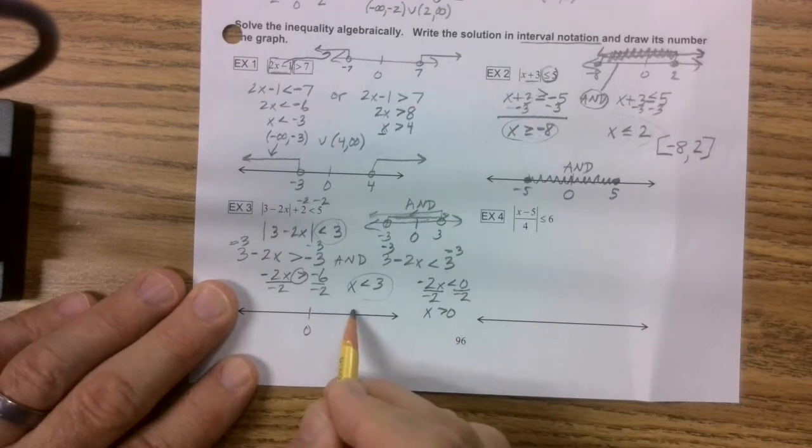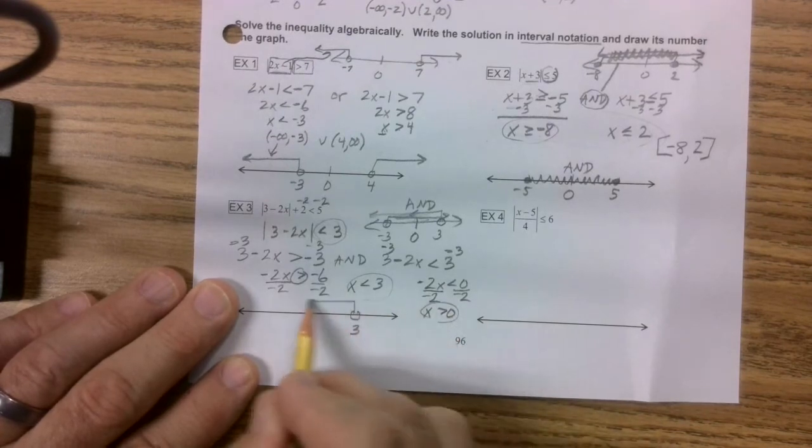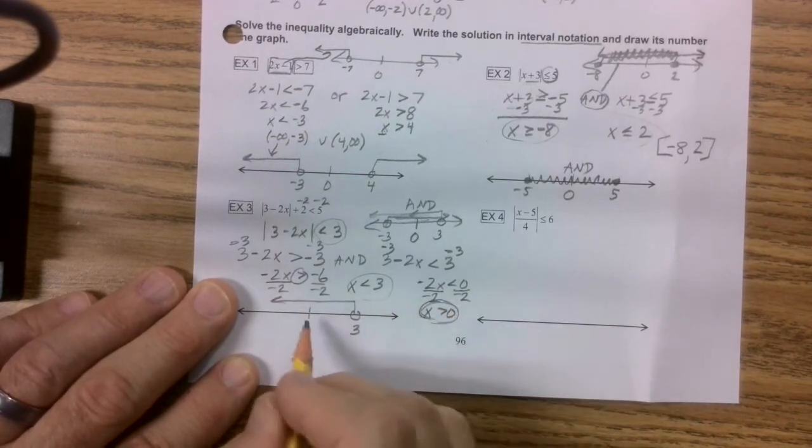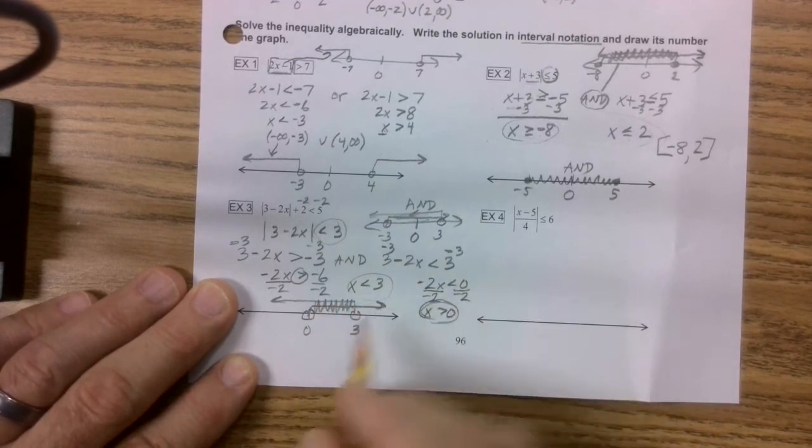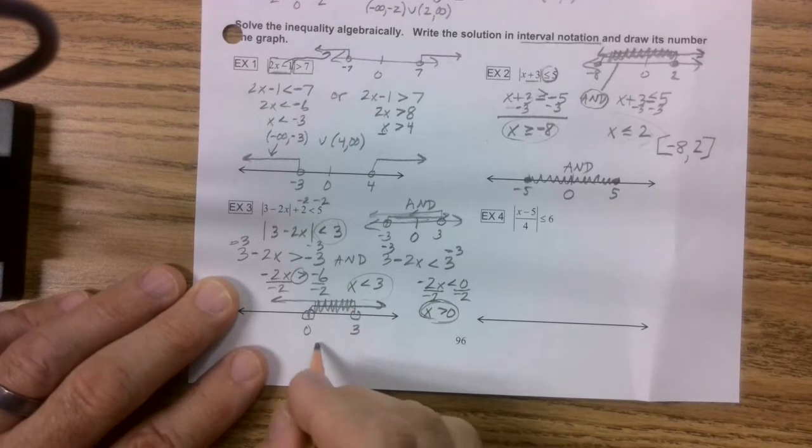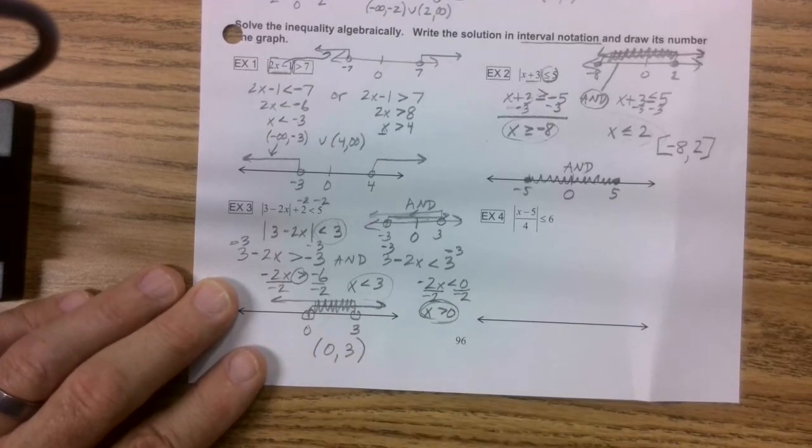And I'm going to take my answers. There's my 0, there's my 3, open circle 3. And this is less than, so it goes this way. X is greater than 0, open circle to the right. And we're looking for this area in common here. But they're open circles, we use parentheses 0 to 3.